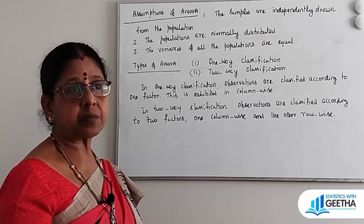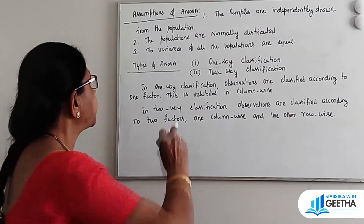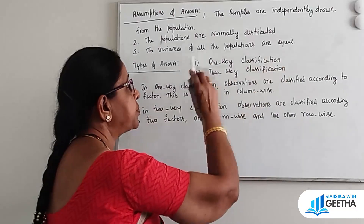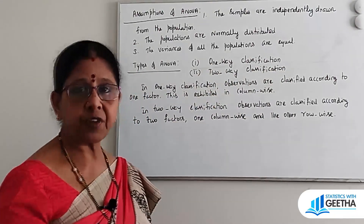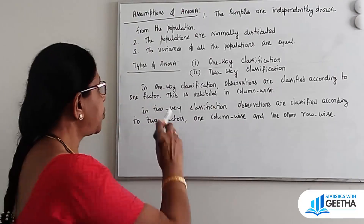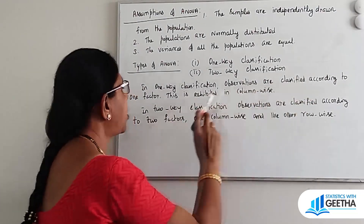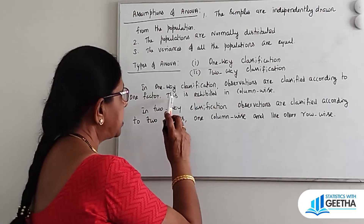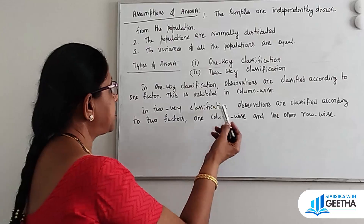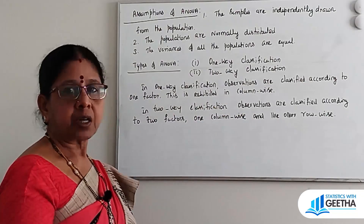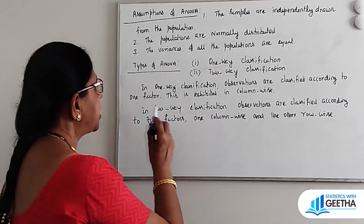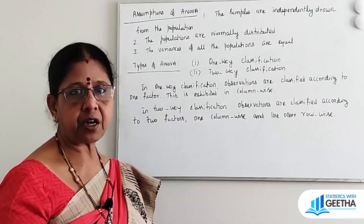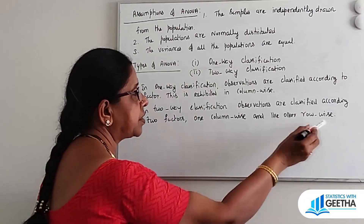There are two types of ANOVA: one is One-Way Classification and the other is Two-Way Classification. In One-Way Classification, observations are classified according to one factor. In Two-Way Classification, observations are classified according to two factors — one factor is column-wise and another one is row-wise.